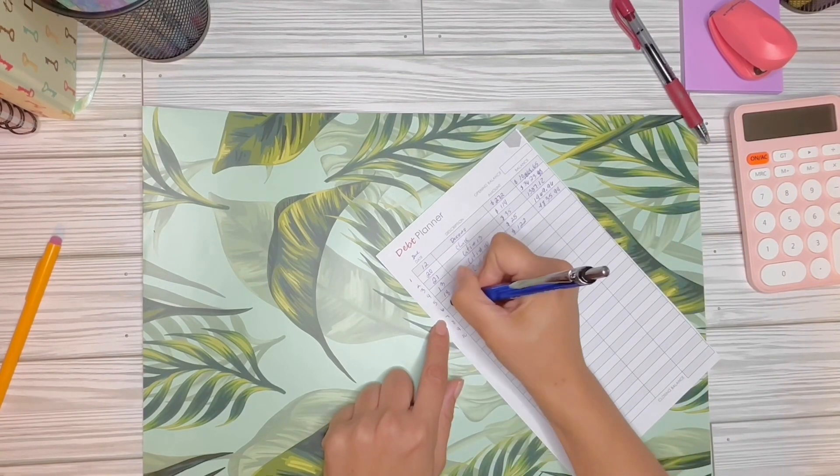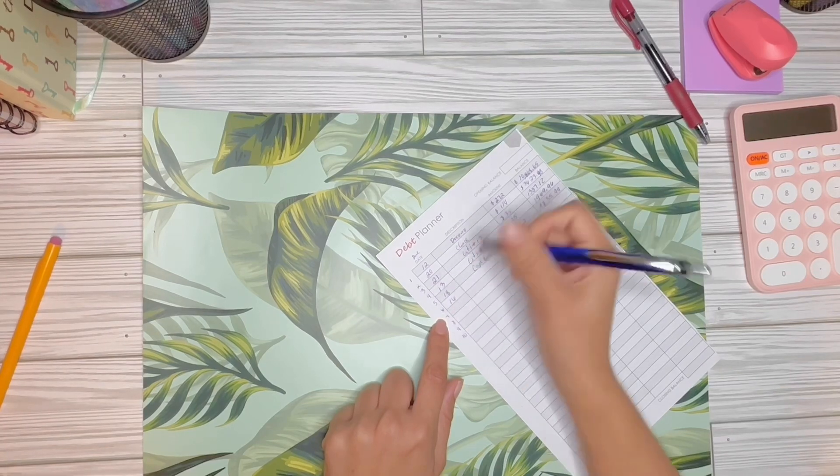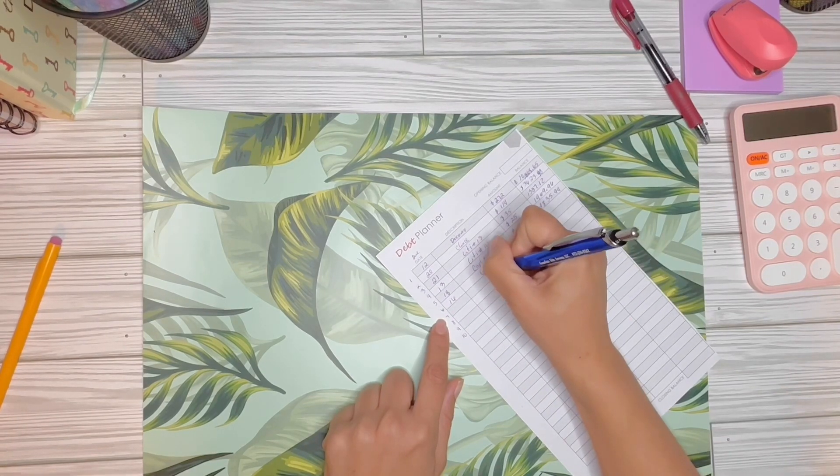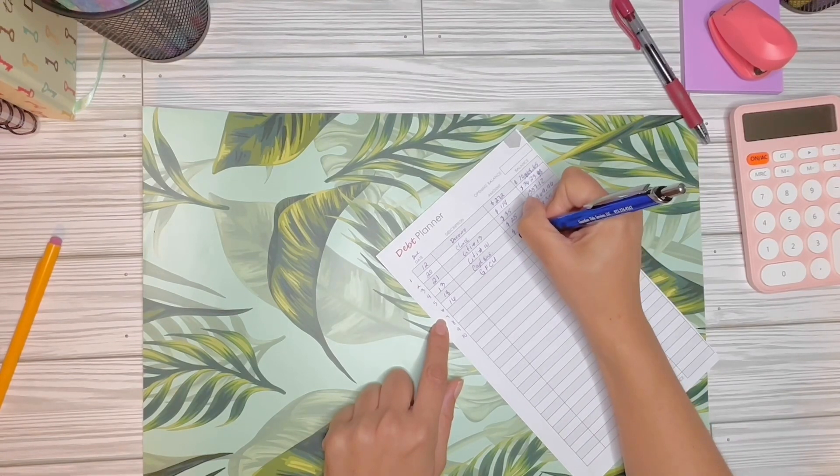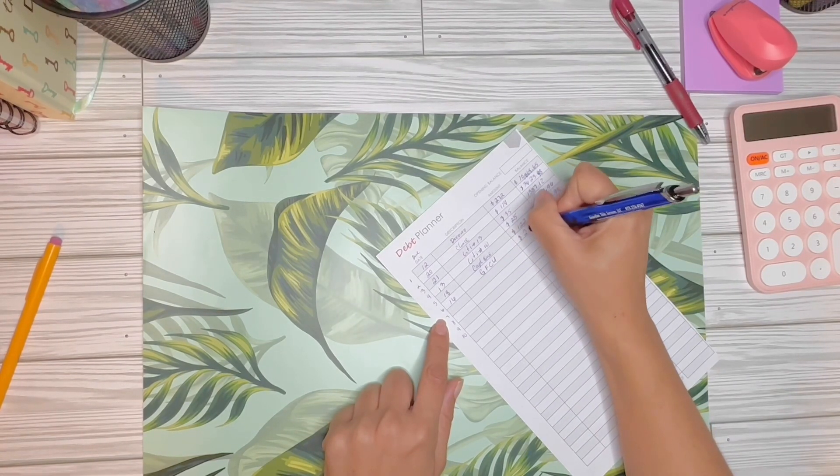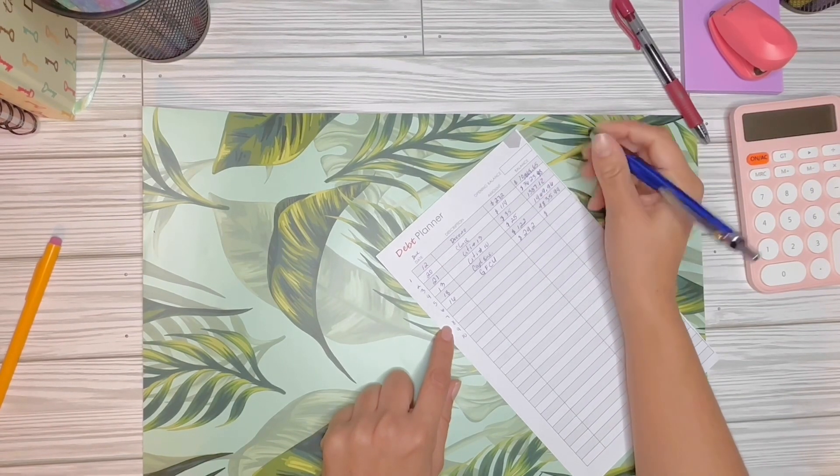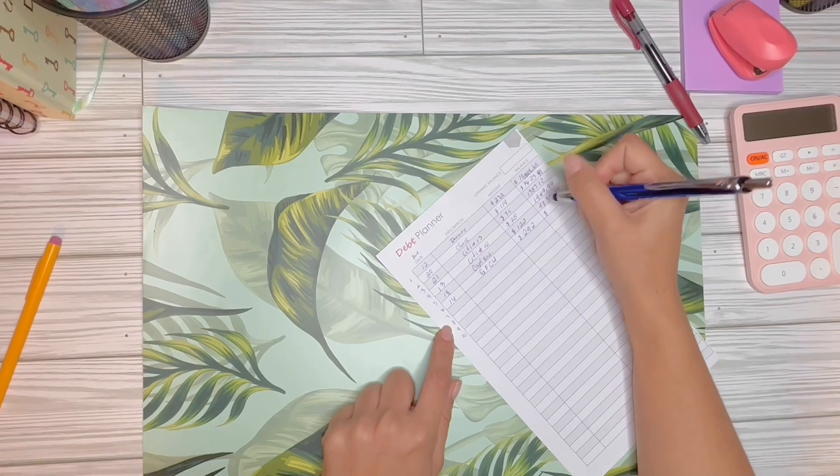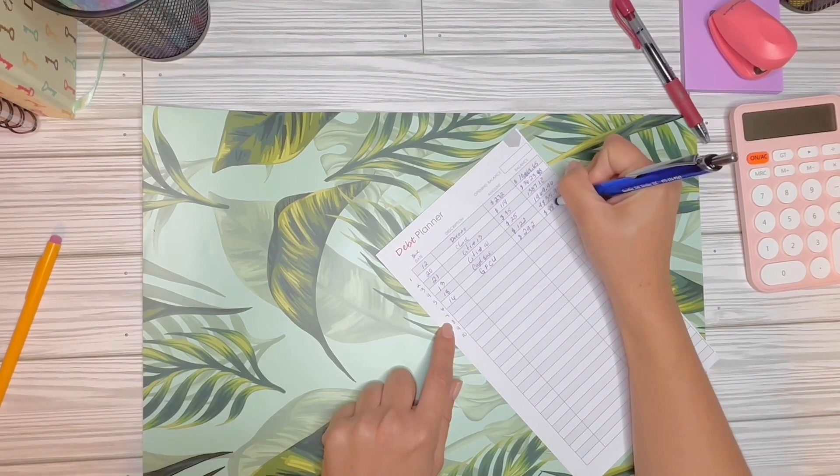My total debt on Capital One is $4,835.94. Then I have a local bank card, the due date is on the 16th.